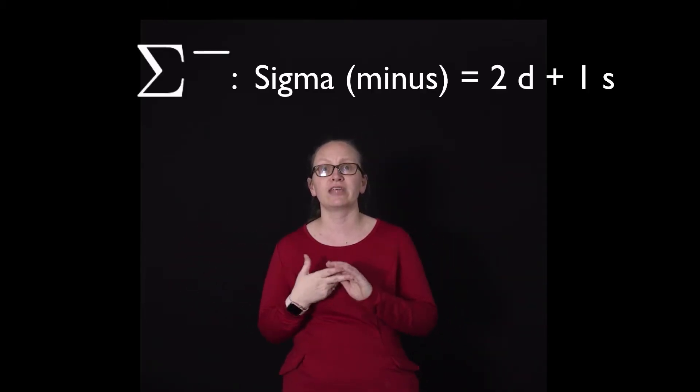Protons and neutrons aren't the only particles that we can make from quarks. We can make a large number of baryons from quarks. An example of such a baryon is a sigma minus particle, which actually consists of two down and one strange quark.